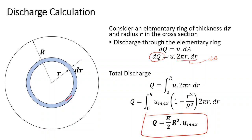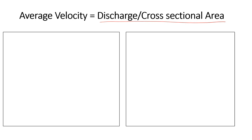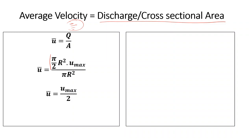To define an average velocity for the pipe, we use ū = Q/A. Although velocity varies across the cross-section, an average velocity is useful for practical purposes. Substituting Q = (π/2)R² * u_max and A = πR², the πR² terms cancel, giving ū = u_max / 2. That is, the average velocity is half of the maximum velocity.